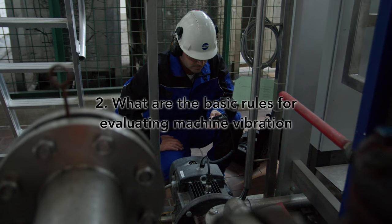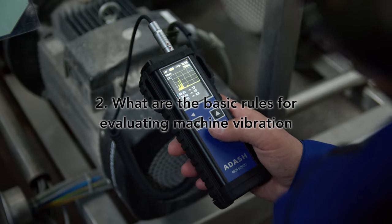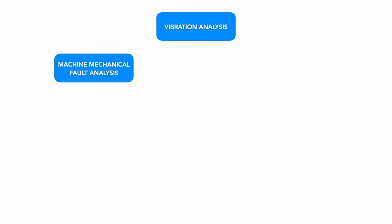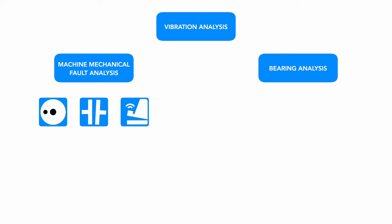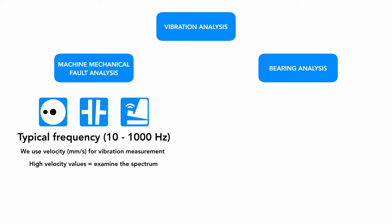Vibration analysis can be broadly divided into two categories, machine mechanical fault analysis and bearing analysis. Basic machine mechanical faults include imbalance, misalignment, and mechanical looseness. We can detect these faults at low frequencies. Vibration measurements are measured in velocity. If the velocity values are high, examination of the spectrum can be helpful.